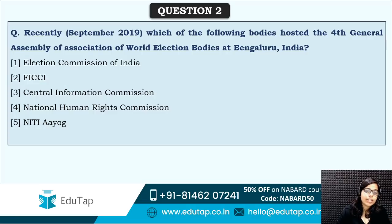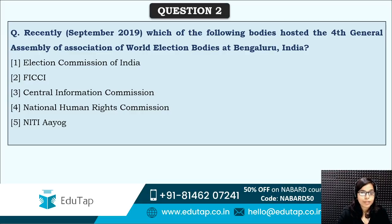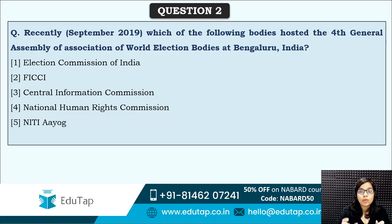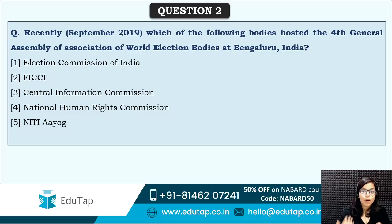The next question is: which of the following bodies hosted the fourth General Assembly of the Association of World Election Bodies at Bengaluru, India? Recently, an Association of World Election Bodies event was organized at Bengaluru, India. Which body hosted it? You have to identify the hosting body from the options.